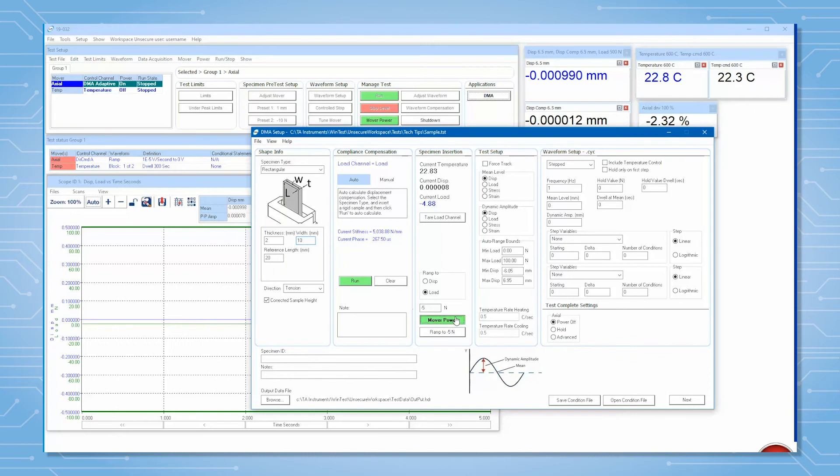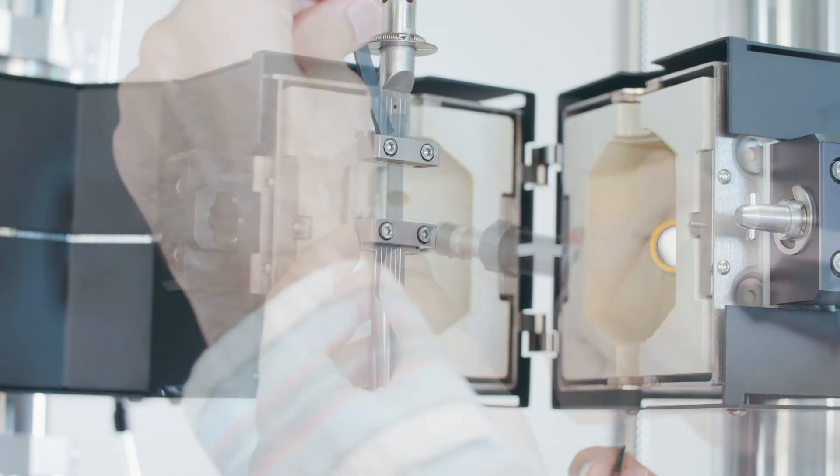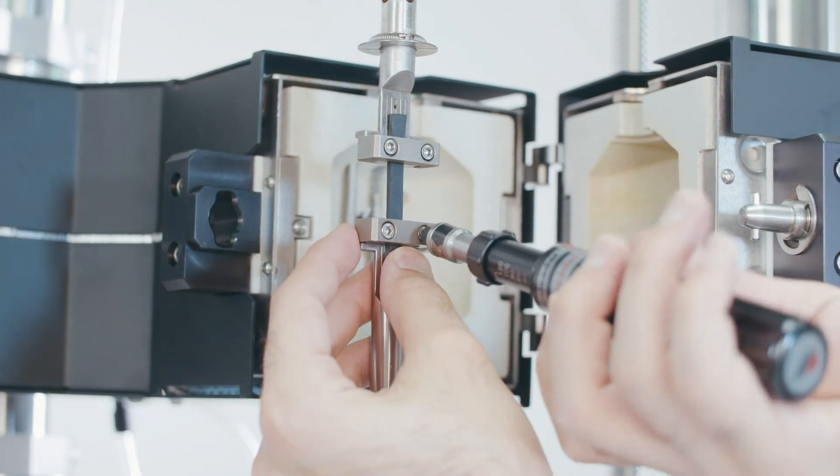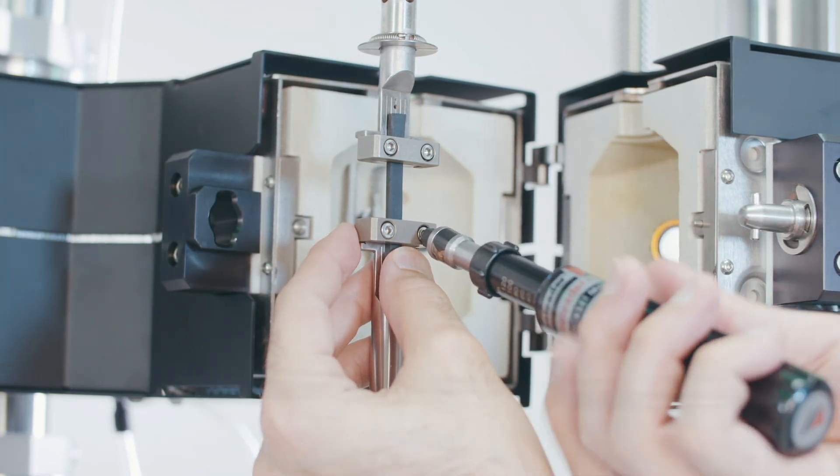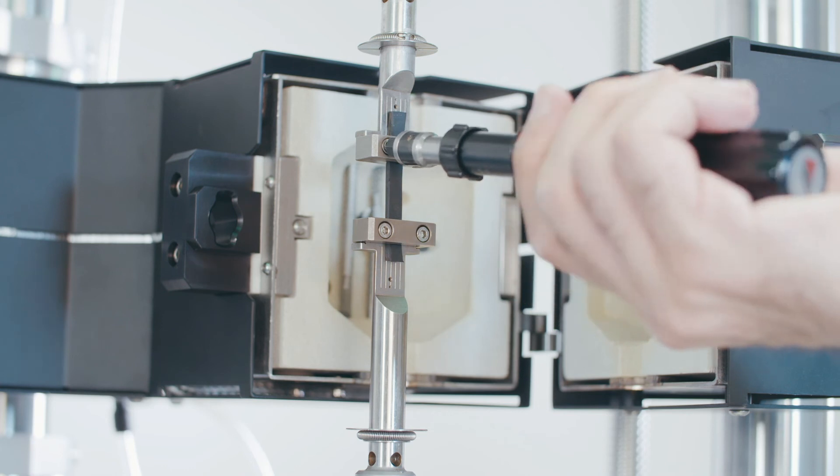Turn the power off. Mount your sample by tightening the bottom screws first with a torque wrench. Tare the load before tightening the top screws to tare the weight of the lower grip and the sample.